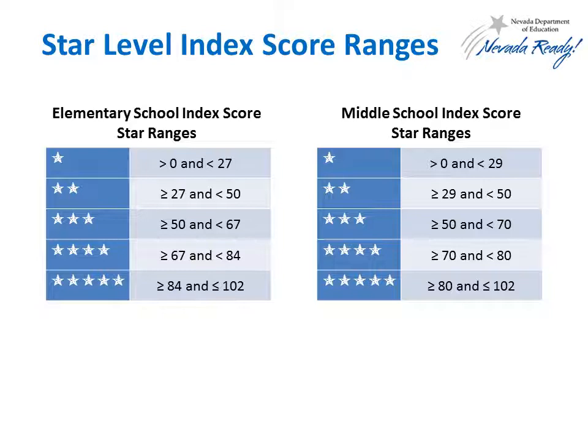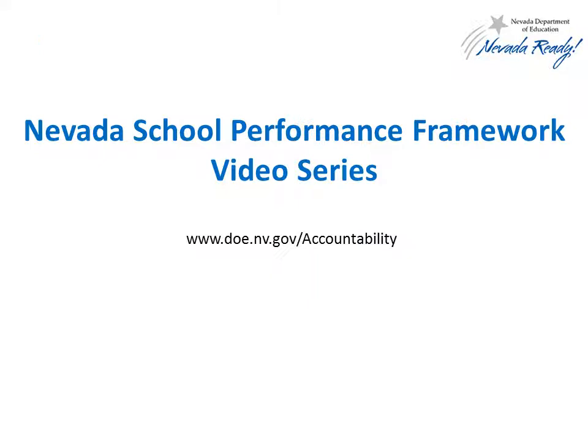This slide shows the index score ranges that were used to determine the 2017 school ratings for elementary and middle school. In 2017, high schools did not receive a star rating. Other videos in the series will take a closer look at what performance looks like at particular star levels and explore some of the components of the Nevada School Performance Framework. All videos can be found at www.doe.nv.gov/accountability. Thank you.